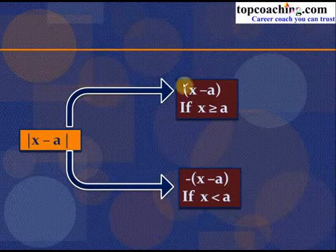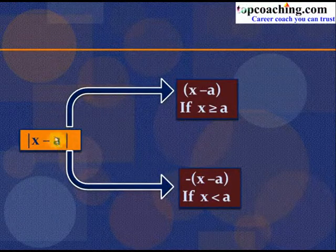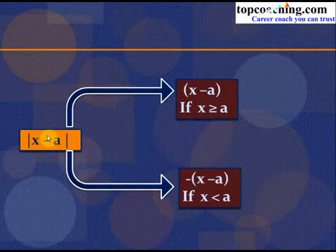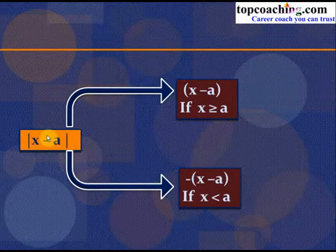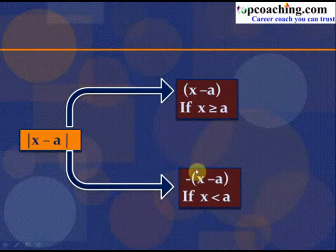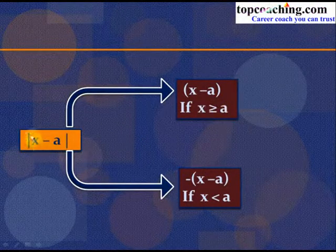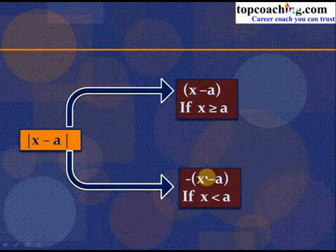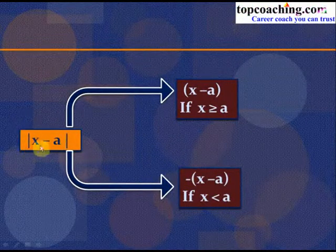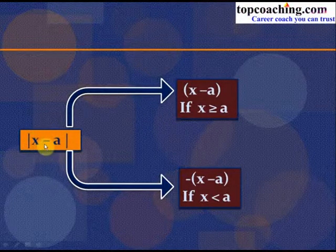When x < a, the quantity inside the modulus is negative, so |x − a| = −(x − a). For x ≥ a: |x − a| = x − a; for x < a: |x − a| = −(x − a). We simply check the values of x for which the quantity inside the modulus is positive and the values for which it is negative.